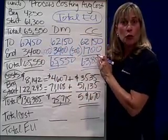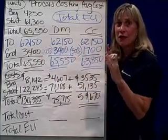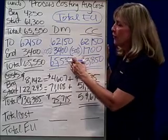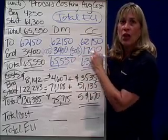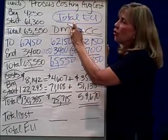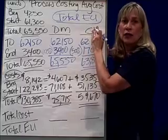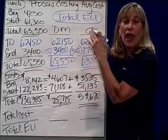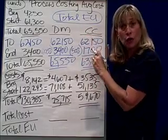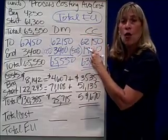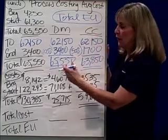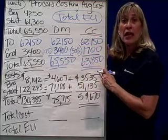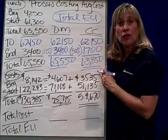Then we did step two, which is different from FIFO. Because here, in average costing, we looked at our total equivalent units — in other words, our total efforts, whether they happened in the current period or in previous periods. And we've come up with the equivalent units of effort.